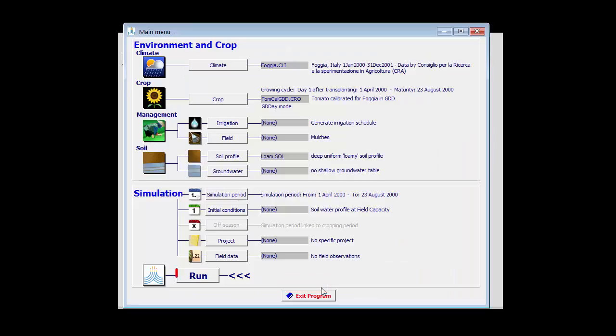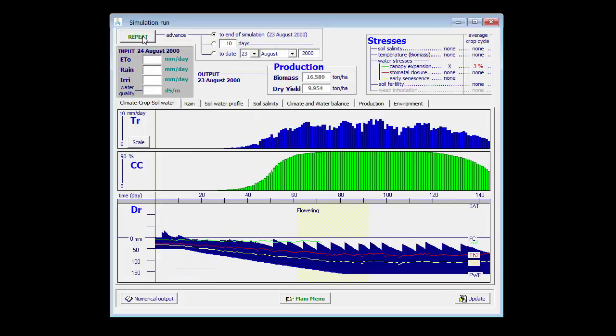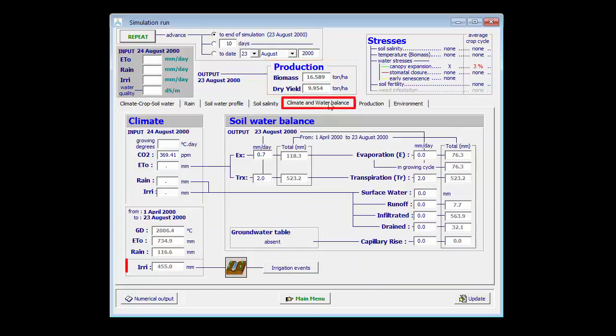I return to the main menu and run the example again. I have the same yield, 9.9 tons. But the amount of irrigation water is reduced to 455. That is because my evaporation is reduced as well, 76.3 mm.